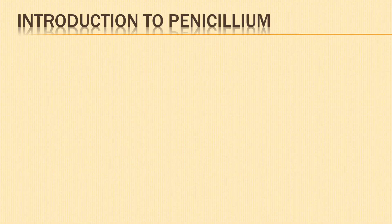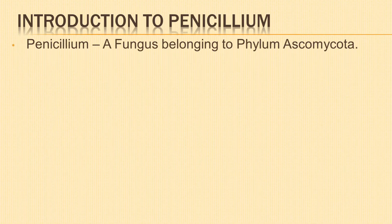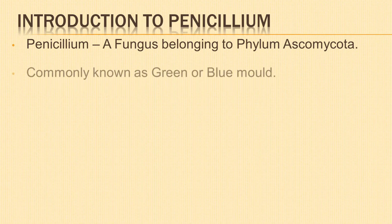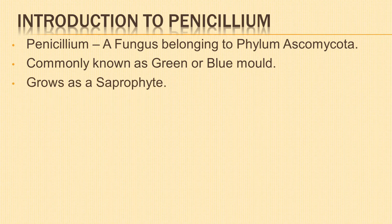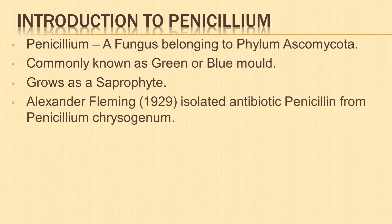Let us start with the introduction to fungus penicillium. Penicillium is a type of fungus belonging to Phylum Ascomycota. It is commonly known as the green or blue mold. It grows as a saprophyte feeding on dead and decaying organisms. Alexander Fleming was able to successfully isolate antibiotic penicillin from Penicillium chrysogenum in 1929.